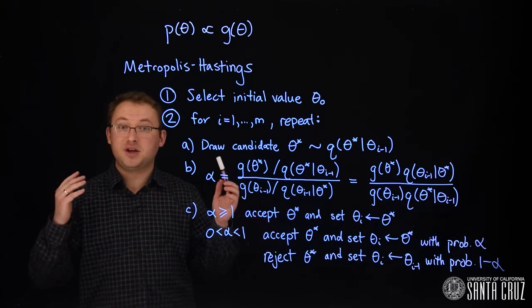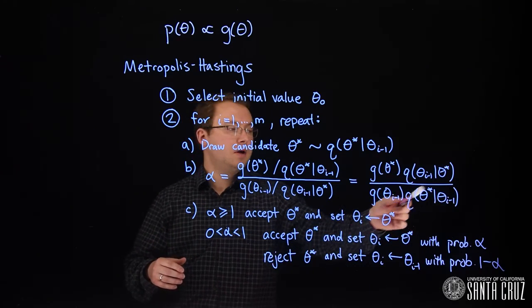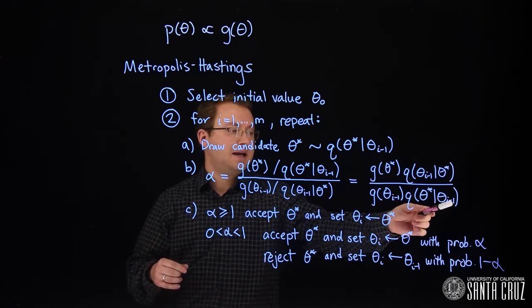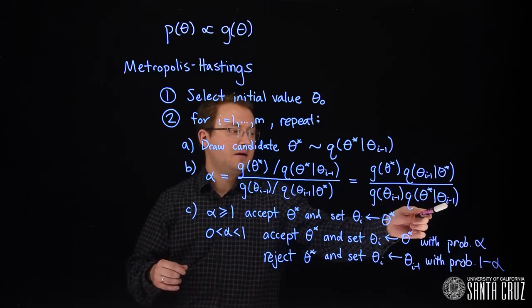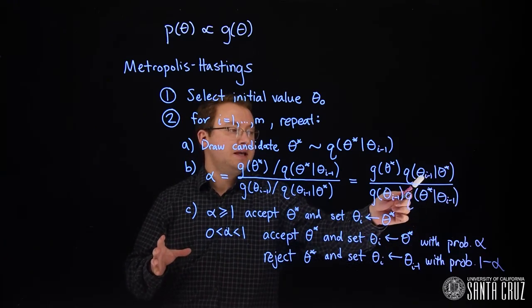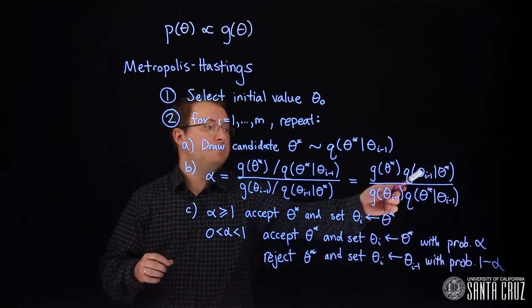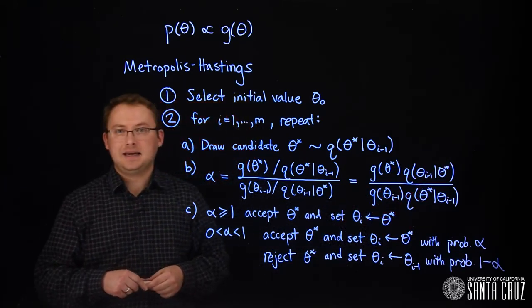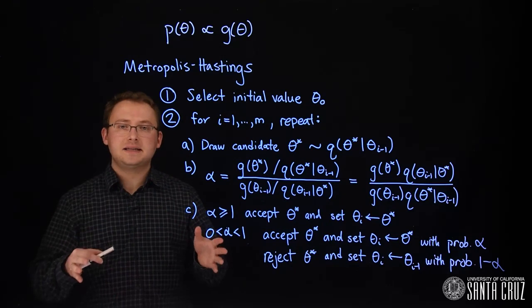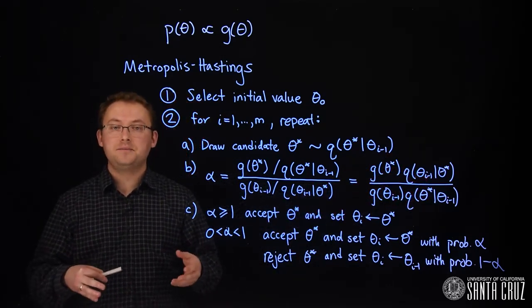This q evaluated at the candidate given the mean here, the density value for this q will be equal to this density value of the old value where the mean is the candidate. This causes these two q's to cancel out when we calculate alpha.